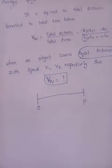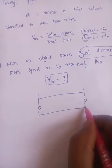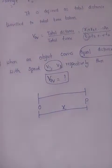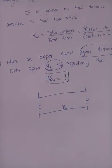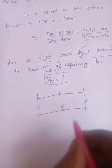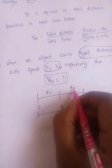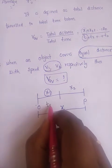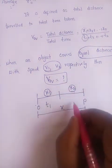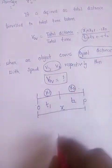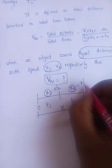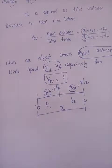Let us take points O to P with total distance X. The body covers the first half distance with speed V1 and the next half with speed V2. Dividing total distance into two equal parts: x1 equals x2 equals x/2. The time taken to cover each half is t1 and t2 respectively. Since the distance is constant, x1 equals x/2 and x2 equals x/2, but t1 is not equal to t/2 and t2 is not equal to t/2 because they travel at different speeds.